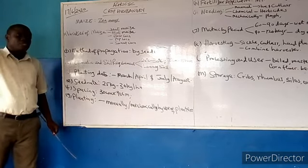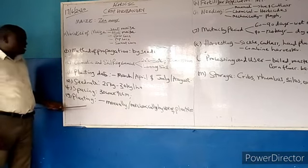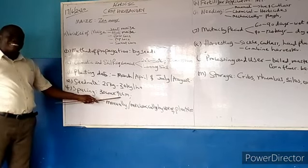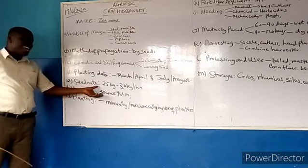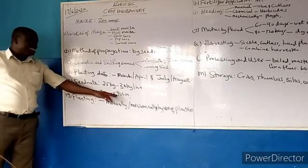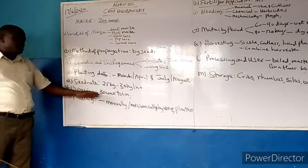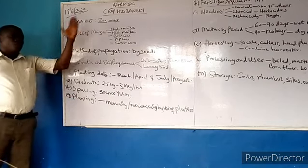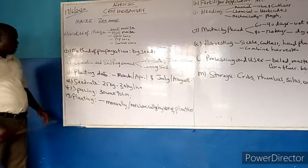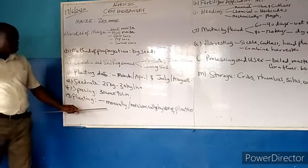The spacing for maize is 30 cm by 90 cm. That means 30 cm within the row and 90 cm between rows. That is how you plant maize — arranged based on rows and the spacing between rows.